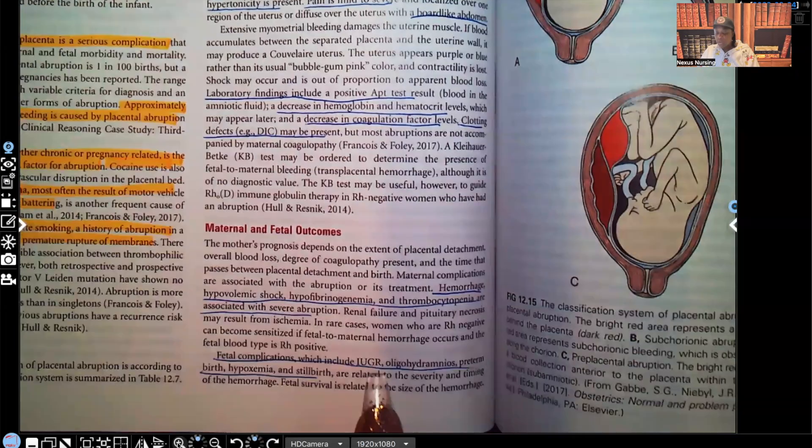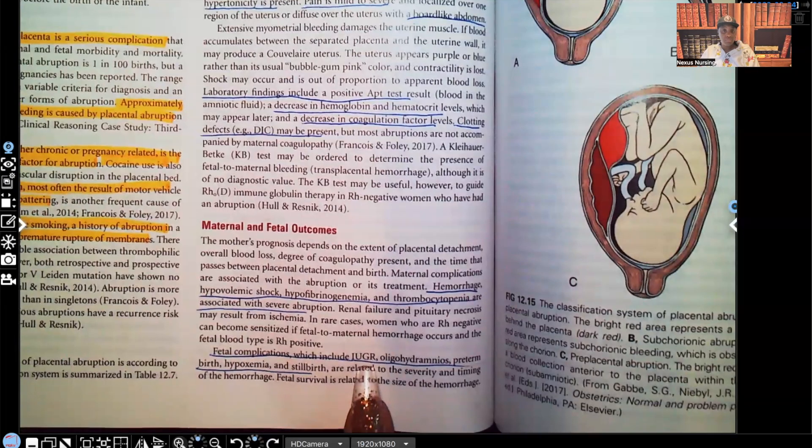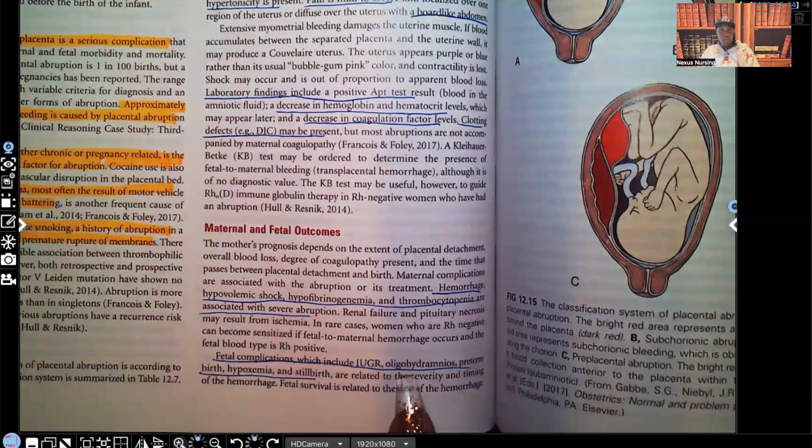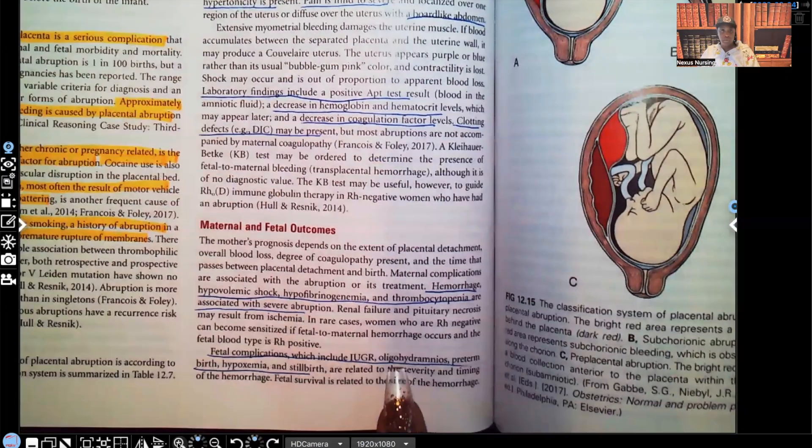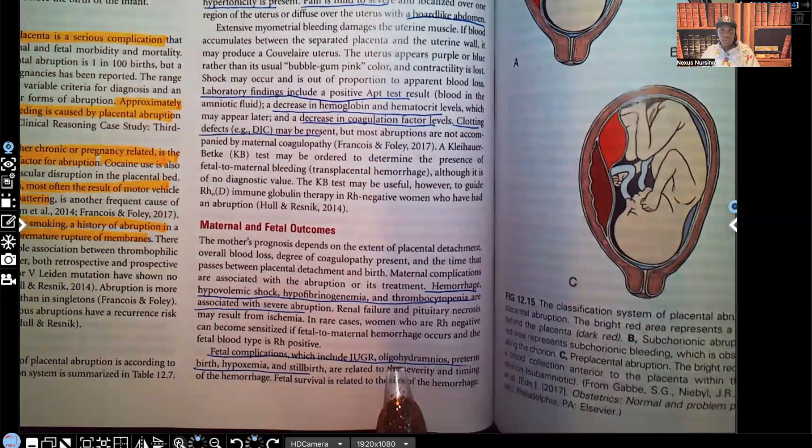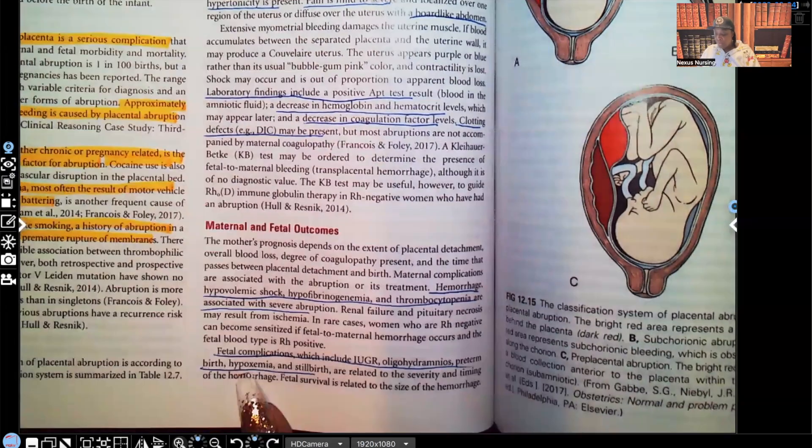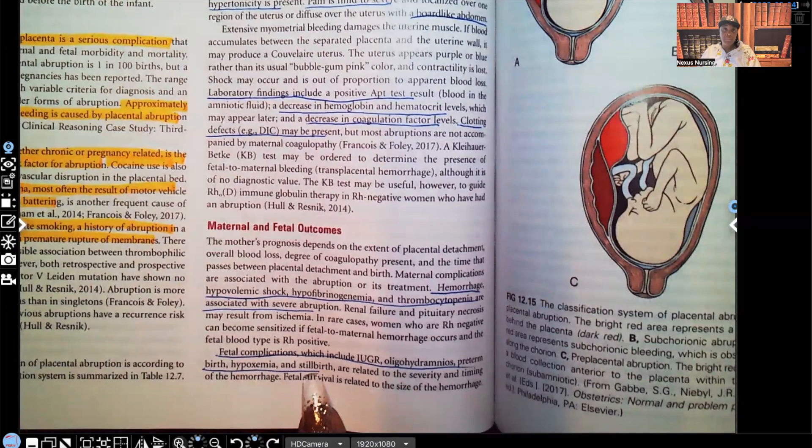Fetal complications include intrauterine growth retardation or restriction. They're going to be much smaller than they should be. Oligohydramnios, there's not enough fluid in the amniotic sac. Preterm birth, hypoxemia, and stillbirth.